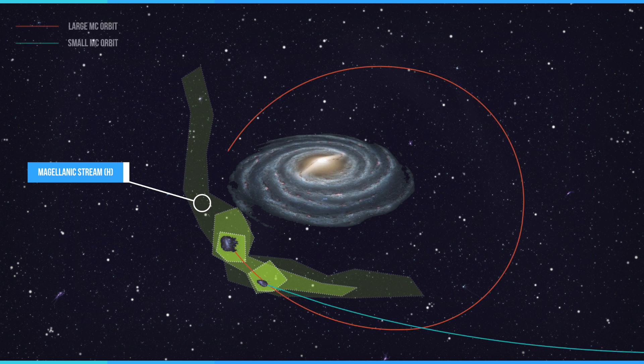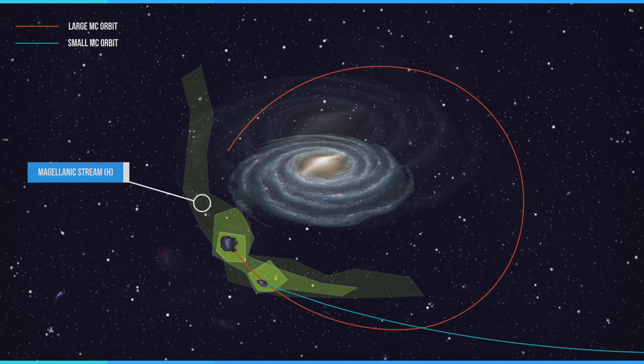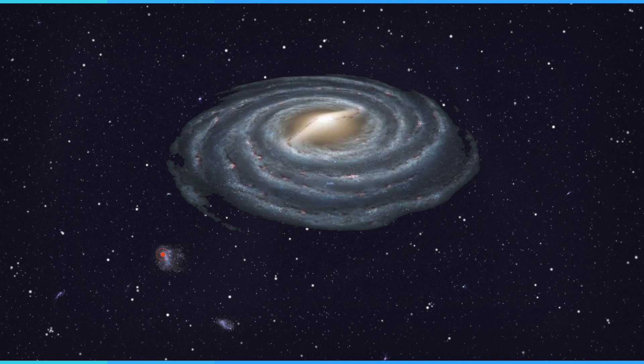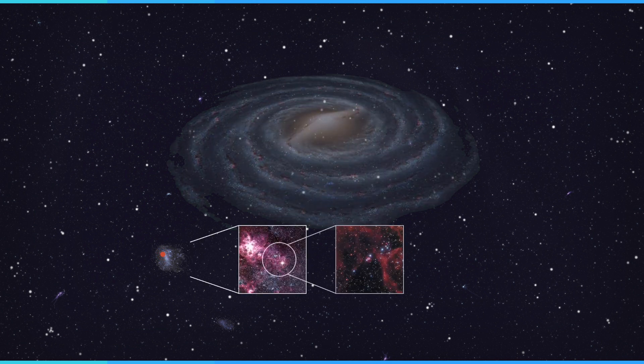Their orbits suggest that we may be seeing them at a time when they are unusually close. In 1987, the large magellanic cloud was host to the brightest supernova observed in four centuries. The supernova was named SN 1987A.